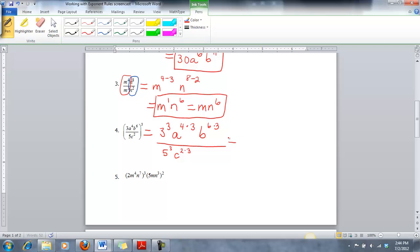When I simplify all this, that gives me three squared is 27. Then I'd have a to the four times three is 12. B to the sixth times three is 18. Divided by five to the third is 125. And we'd have c to the sixth power. So I have three variables, but they're all different. So I'm good there. All the exponents are positive. I'm good there. And my coefficients here, 27 over 125, I don't think that can be reduced at all. So that's going to be our final answer. If those two numbers did have a number in common that you could factor out, you can reduce it down.